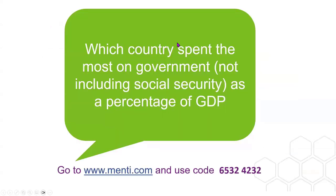We have another poll: which country spent the most on government — not including social security — as a percentage of GDP? The options are Belgium, Kiribati, Norway, Timor-Leste, United Arab Emirates and the UK. Go to menti.com and use the code 6532 4232. The answer: in 2022, Kiribati spent 109% of its GDP on government expenditure, Timor-Leste 107%, the UK 44%, and the UAE spent just 4% of its GDP on government.